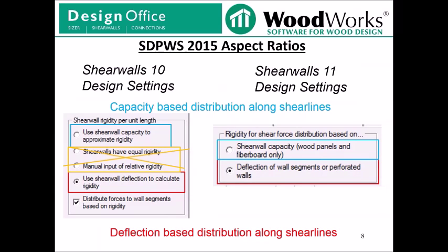In ShearWalls 10, there were four options for distributing load along a shear line, but we have decided to remove the options 'shear walls have equal rigidity' and 'manual input of relative rigidity.' Deflection-based distribution is still available and is still the default distribution method. If you want to utilize capacity-based distribution, all you must do is toggle the method in the design settings.